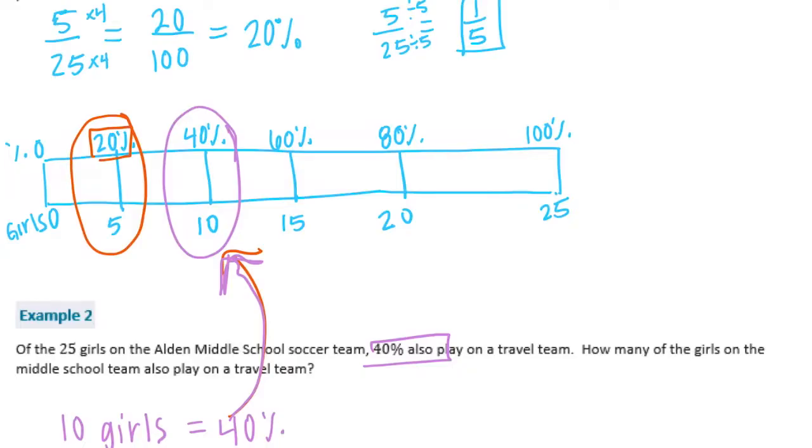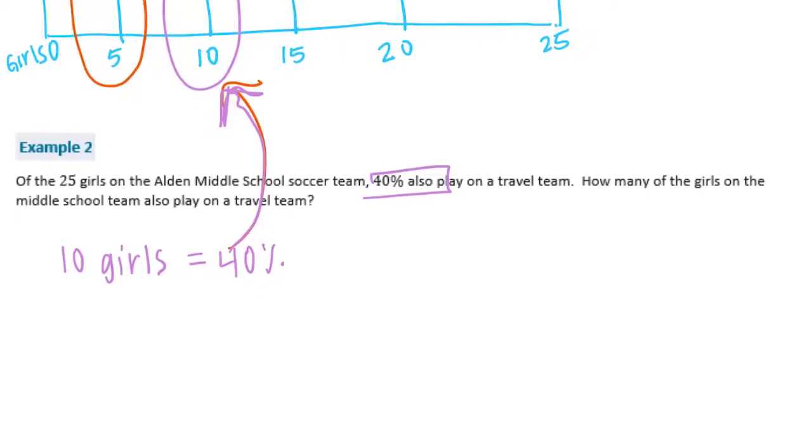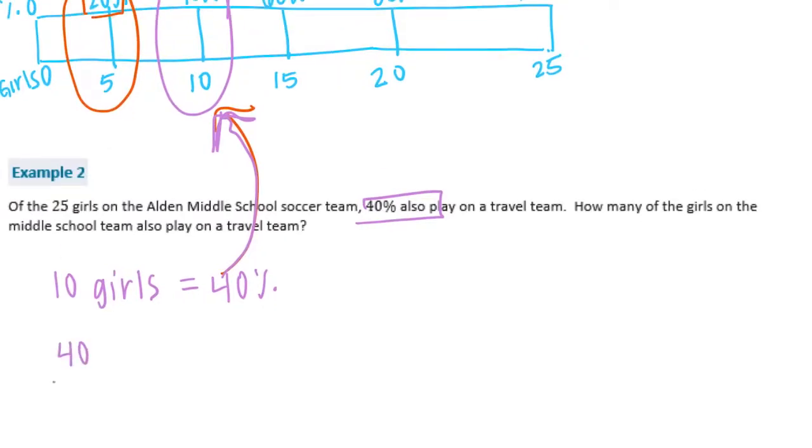So you can either redraw it. If you wanted to do another method, 40 out of 100, 40%, we could see what that's equal to out of 25. So 100 divided by 4 is equal to 25, so 40 divided by 4 would be 10. So that also shows that 10 out of the 25 girls were on the travel team.